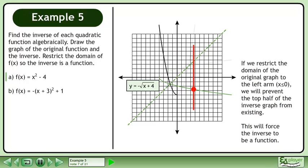If we restrict the domain of the original graph to the left arm, we will prevent the top half of the inverse graph from existing. This will force the inverse to be a function.